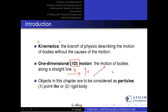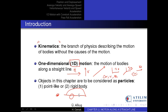Later on, we will discuss two- and three-dimensional motions, which all depend on a solid understanding of the basic concepts of one-dimensional motion: displacement, velocity, and acceleration. Objects in this chapter will be considered as particles. A particle might be point-like, such as a small bead, or it might be a rigid body, like a car, whose every point moves in the same direction at the same rate — that is, it moves like a particle.